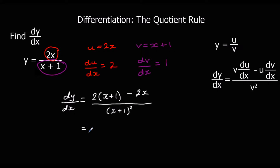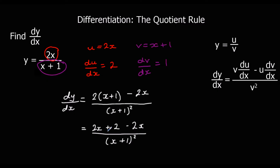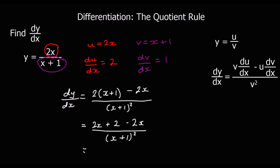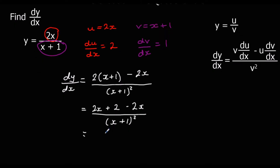If we simplify by expanding the top line, we'll have 2 times x is 2x, 2 times 1 is 2, and minus 2x, leaving the bottom as it is. And we've got 2x minus 2x on the top, so 2x take away 2x is nothing. So we're left with 2 over x plus 1 squared. And there's dy/dx.